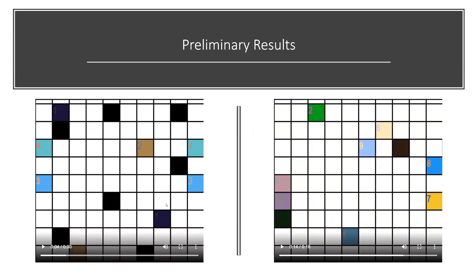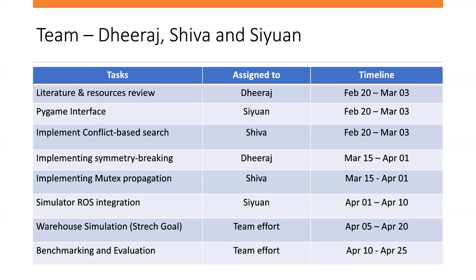This is the distribution and timeline of our project. We have completed the literature review, developed the Pygame interface, and implemented Conflict-Based Search. The next steps are implementing Symmetry Breaking, Mutex Propagation, and ROS integration of the simulator. We are also planning to simulate a warehouse environment using our MAPF algorithms, followed by benchmarking and evaluation. Thank you.